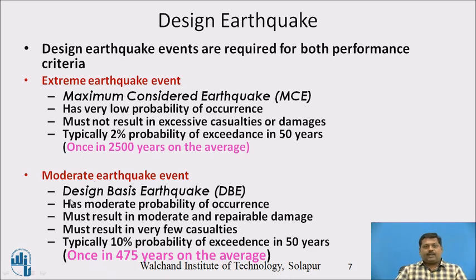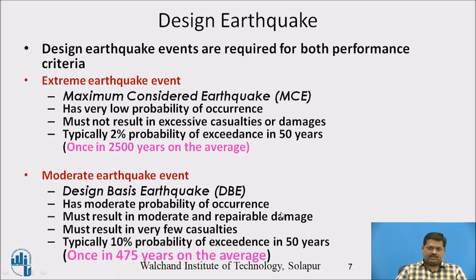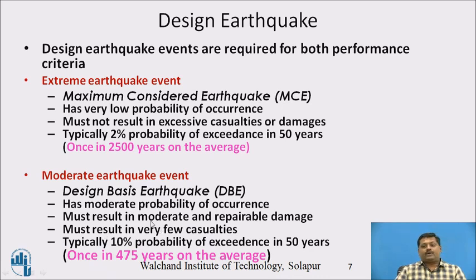The moderate earthquake event is termed as Design Basis Earthquake (DBE) in our code. It has a moderate probability of occurrence and must result in moderate and repairable damage — meaning damage to structural or non-structural elements can be repaired. It must result in very few casualties and has a probability of occurrence of 10%, corresponding to a return period of once in 475 years on average.